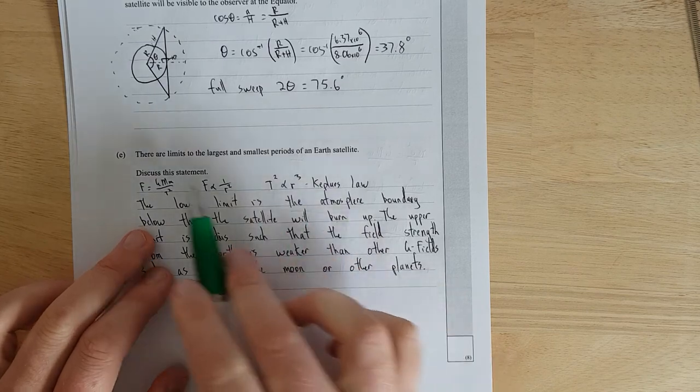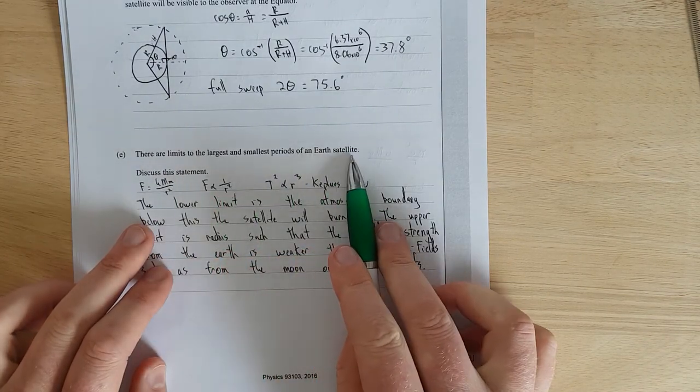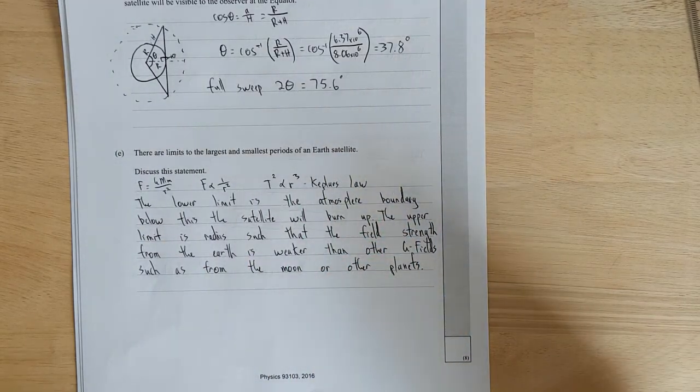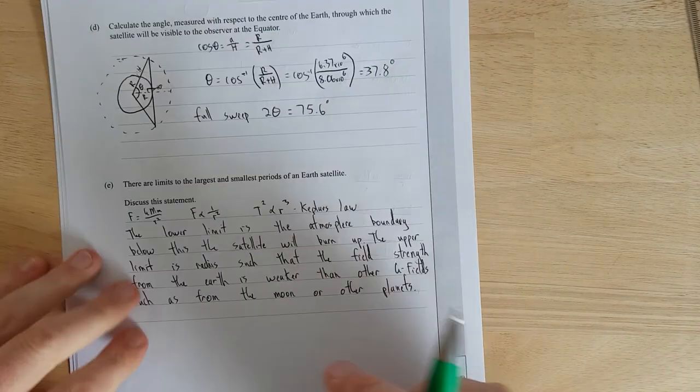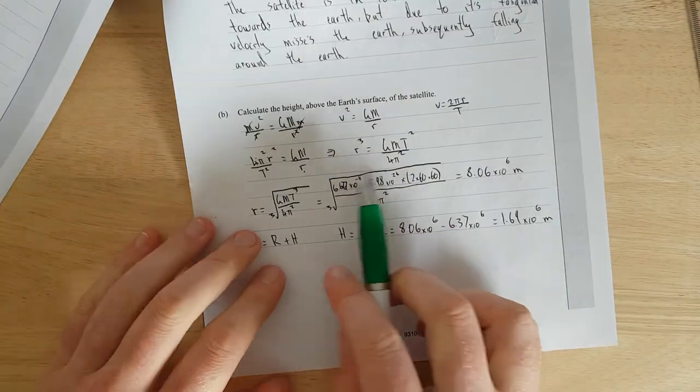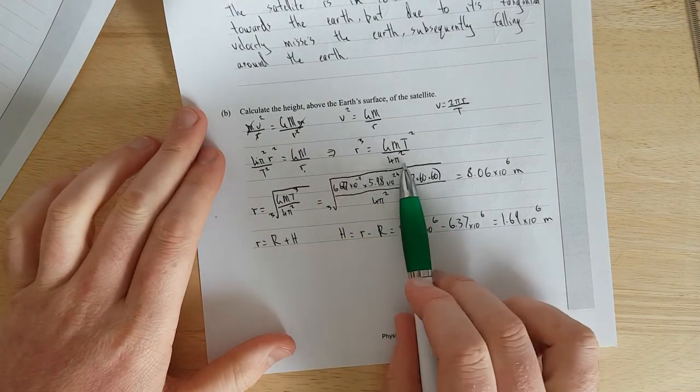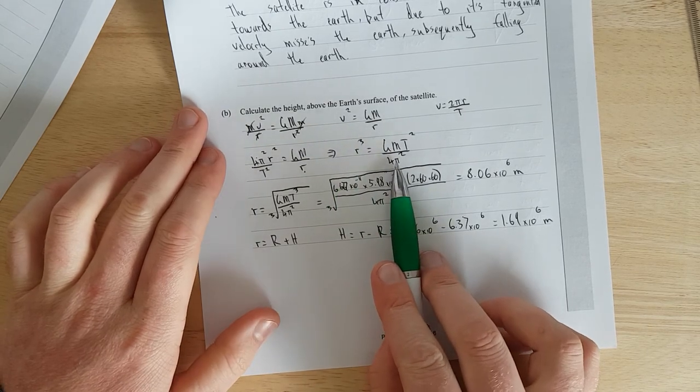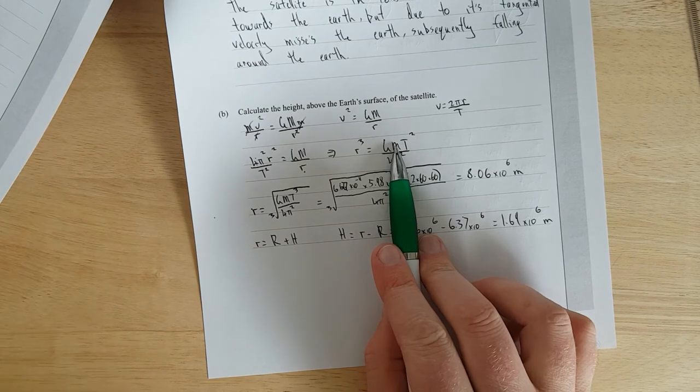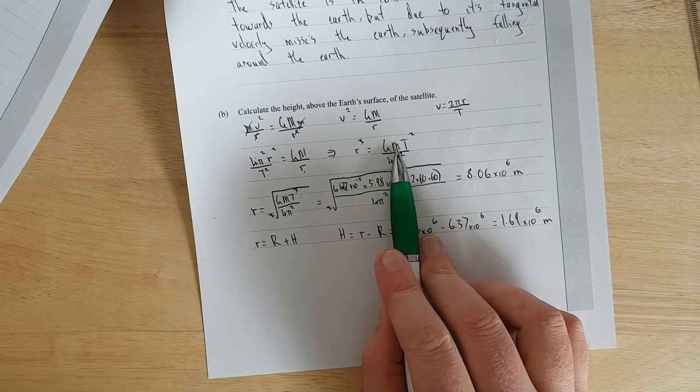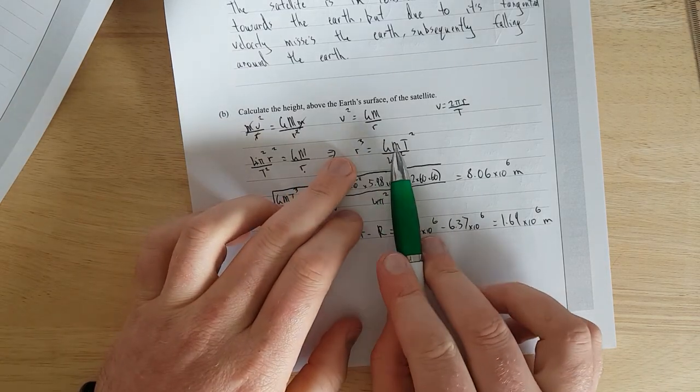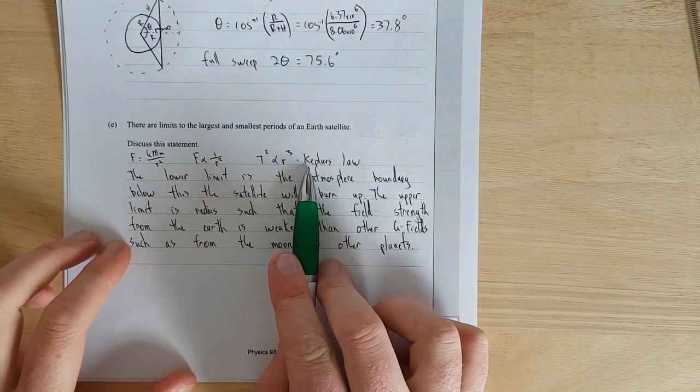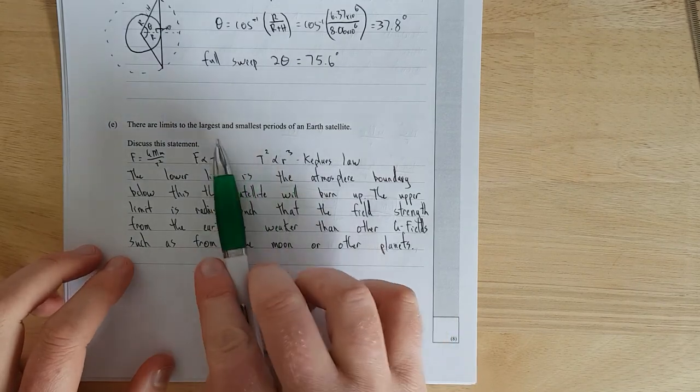Right so one thing I completely missed is there are limits to the largest and smallest periods of an Earth satellite. This doesn't talk about the radius whatsoever I just assumed because I already know the answer over the page. When I was talking about this question here I was talking about Kepler's law of derivation. Kepler's law is essentially if you move the 4π² up onto this side, 4π, G and the mass of the Earth are all essentially constants. The only thing that's not a constant is the mass of the Earth but you can make it constant so essentially you have R³ is proportional to T² so we have T² is proportional to R³ that's Kepler's law.